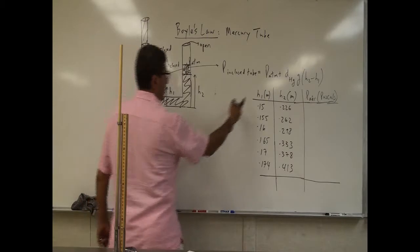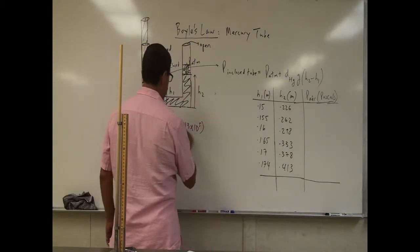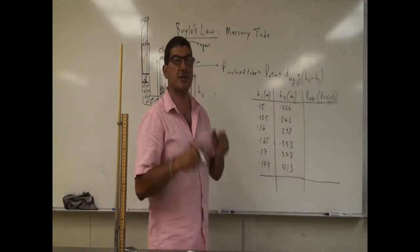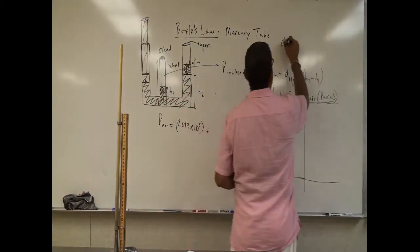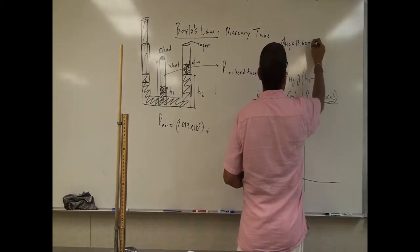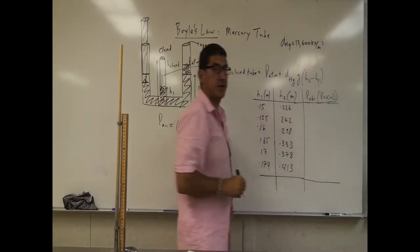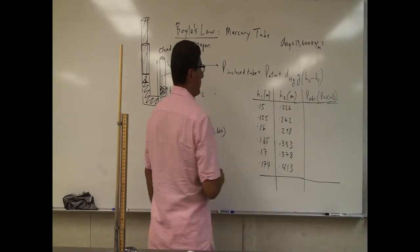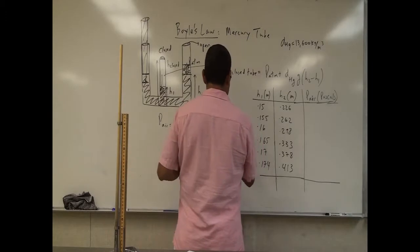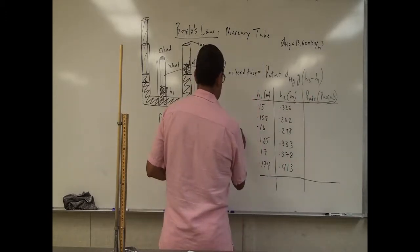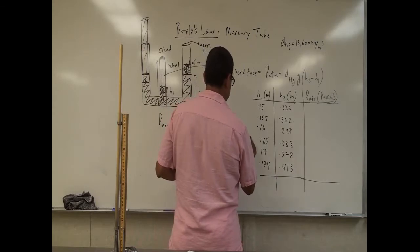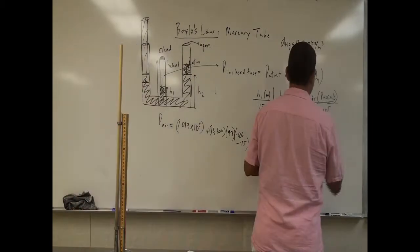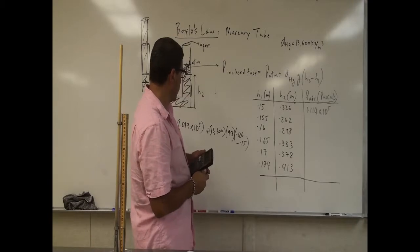The pressure of the air is going to be the atmospheric pressure — 1 times 10 to the fifth pascals. The density of mercury, since it's 13.6 times denser than water, is going to be 13,600 kilogram per cubic meter. The density of water is 1,000 kilogram per cubic meter. So you put here 13,600 kilogram per cubic meter, then multiply that by 9.8, and then multiply that by the difference of the heights: 0.226 minus 0.15. That gives you the pressure of the atmosphere pascals.